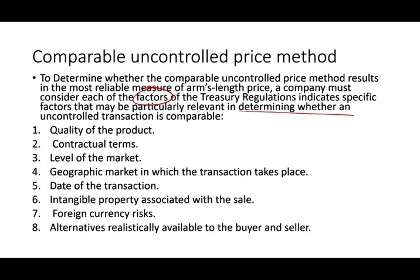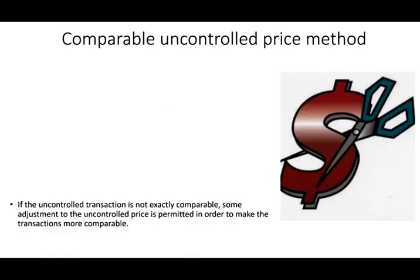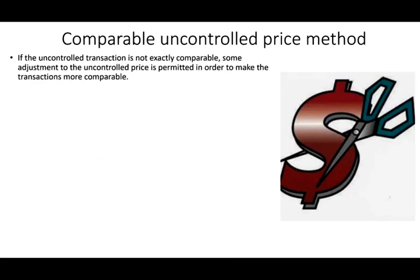When you are determining the comparable uncontrolled price, don't look only at the price. If the product is being sold in Europe, it might be different than in North Africa, or the Italian market versus the French market. The quality of the product — is it exactly the same or a little bit different? The date of the transaction — maybe during peak time you can charge more. If the uncontrolled transaction is not exactly comparable, some adjustments to the uncontrolled price are permitted in order to make the transaction more comparable.